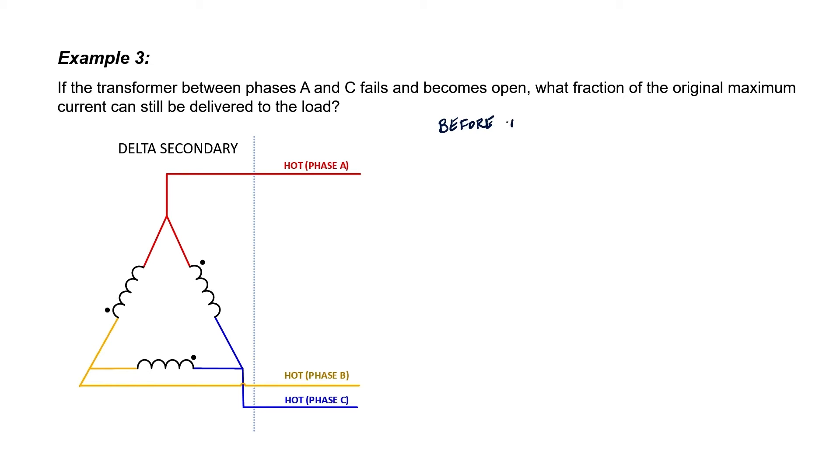Let's then calculate what fraction of the original maximum power can still be delivered to the load. First, let's consider the amount of current that has to pass through all these coils before the failure takes place. When we're talking about the maximum power that can be delivered to the load, we're actually asking a question about the maximum possible current that any of these particular transformers can handle. See, that maximum current that the transformer can handle is not going to change in either the case of having a failure or not having a failure.